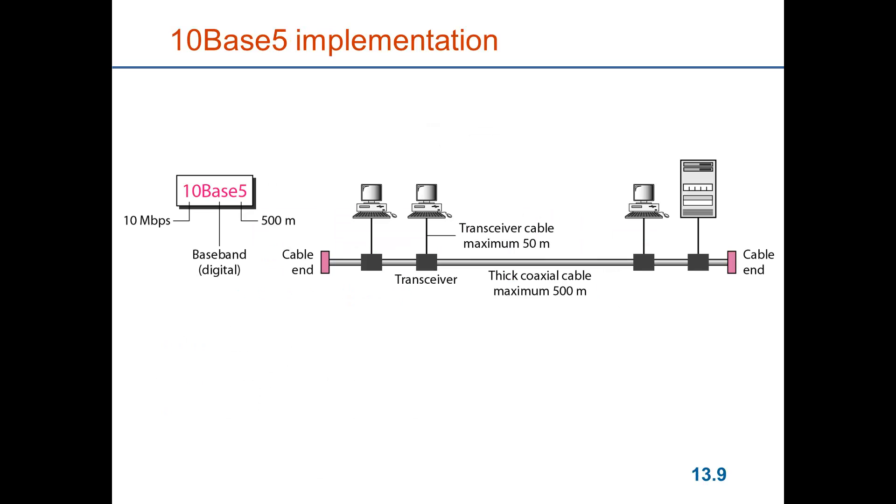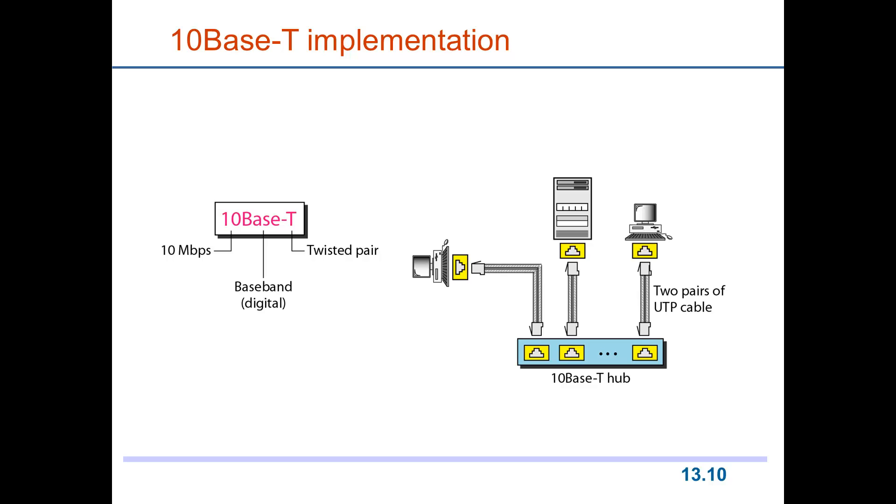If we look at the thick coax cable implementation, there was a transceiver that was connected directly to the cable and then there was a cable connected up to the computer which could be of length at most 50 meters. The maximum length of the bus was 500 meters owing to signal property reasons such as attenuation and for having the collision detection to work.